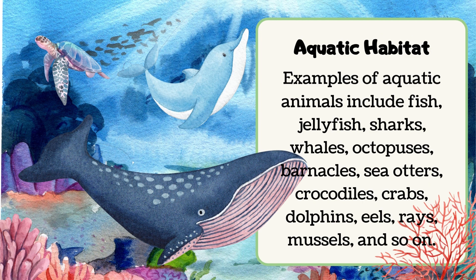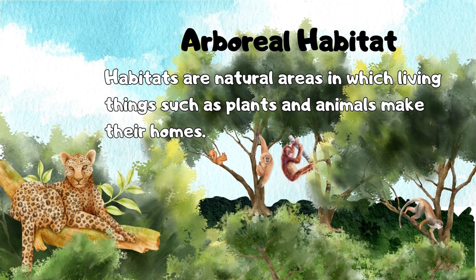Examples of aquatic animals include fish, jellyfish, sharks, whales, octopuses, barnacles, sea otters, crocodiles, crabs, dolphins, eels, rays, and so on.